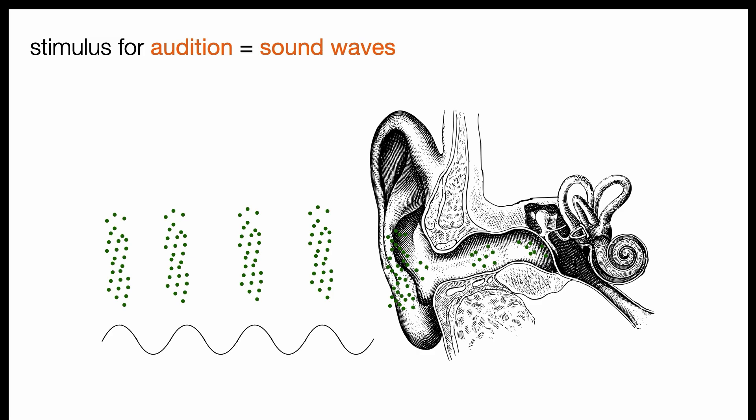And the stimulus for audition, or hearing, is sound waves. Sound waves are created when molecules in the air or some other medium are compressed and then rarefied in a wave pattern. Sound waves are funneled through the ear canal towards the eardrum, where they are further processed by the ear.